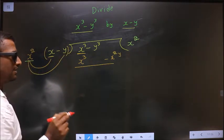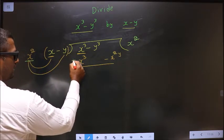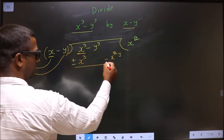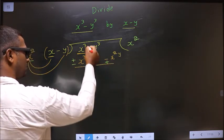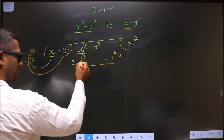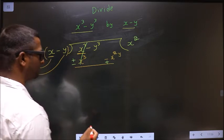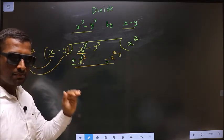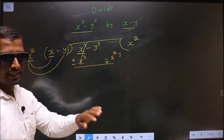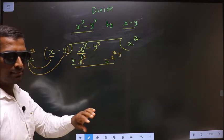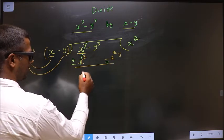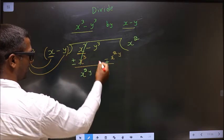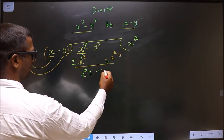Now change the signs. Here it is plus, make it minus. Here it is minus, make it plus. So now this cancels out. Here I write in the descending powers of x — first I write x square y and then y cube.